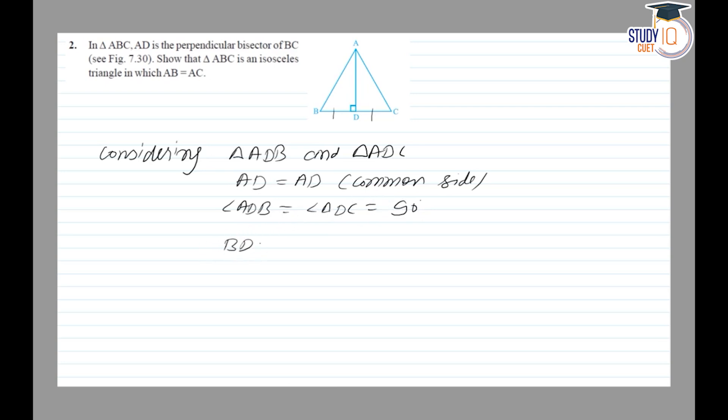BD is equal to DC, as AD is perpendicular bisector of BC. So I can say triangle ADB is congruent to triangle ADC by side angle side rule.